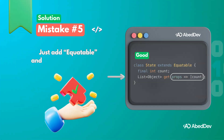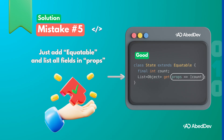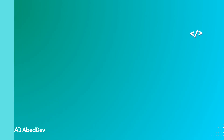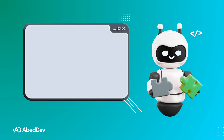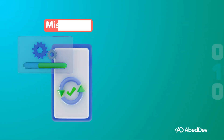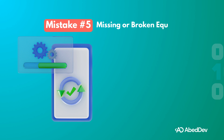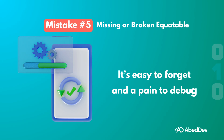The props getter is what makes Flutter say 'the states are different — time to rebuild the UI.' If you miss that, the rebuild never happens even though you emitted a new value. Here's the checklist: always extend Equatable for your states, always override the props getter, always include all fields in the list. It's easy to forget and a pain to debug, so don't skip it.